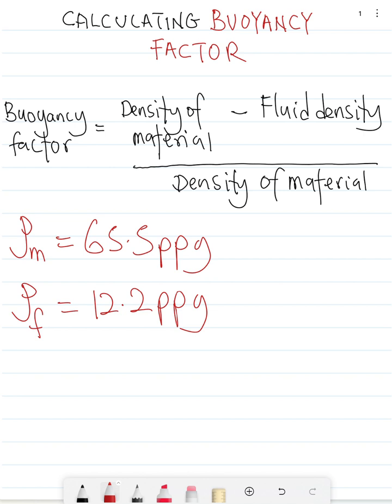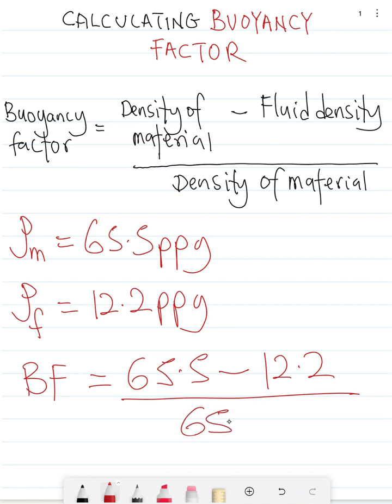To calculate the buoyancy factor, we say the buoyancy factor is going to be equal to 65.5 minus 12.2 divided by 65.5.